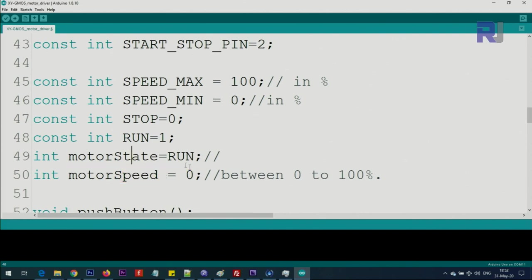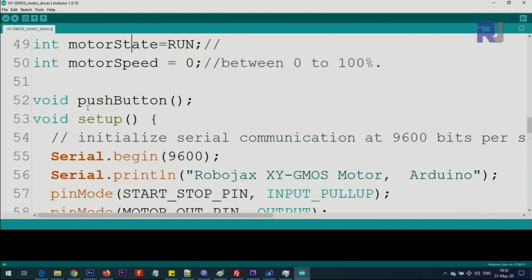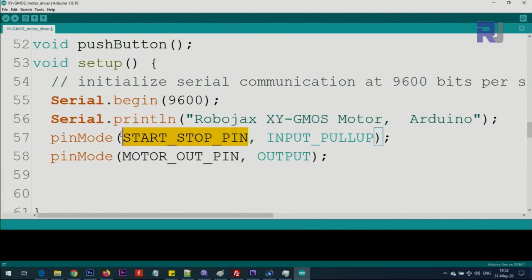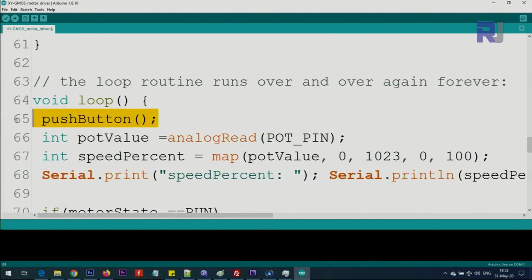Push button is a function - this is a prototype of a function at the bottom of the code. Inside the setup we initialize the serial monitor, printing this text. Define the start/stop pin using pinMode as input with pull-up feature so we don't need to use a pull-up resistor with the push button. Then motor out pin, defining the motor output pin, pin 3 in this example, as an output.